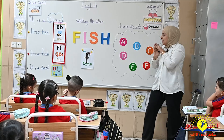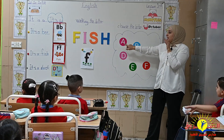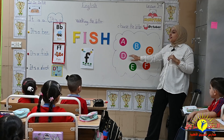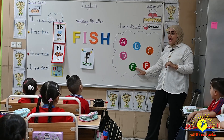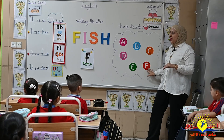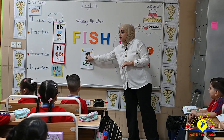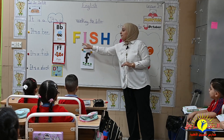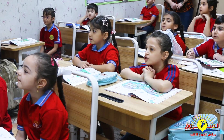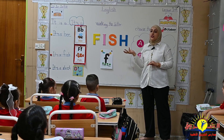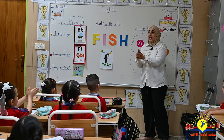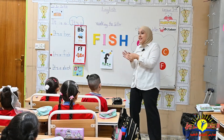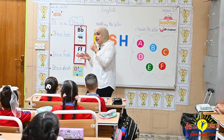Our letter starts with the letter. Repeat after me: A, B, C, D, E, F. Okay? So today our letter is F. Fish — repeat after me: fish, F, fish. What does fish mean? Samaka. Fish — Samaka, yani fish. Okay.